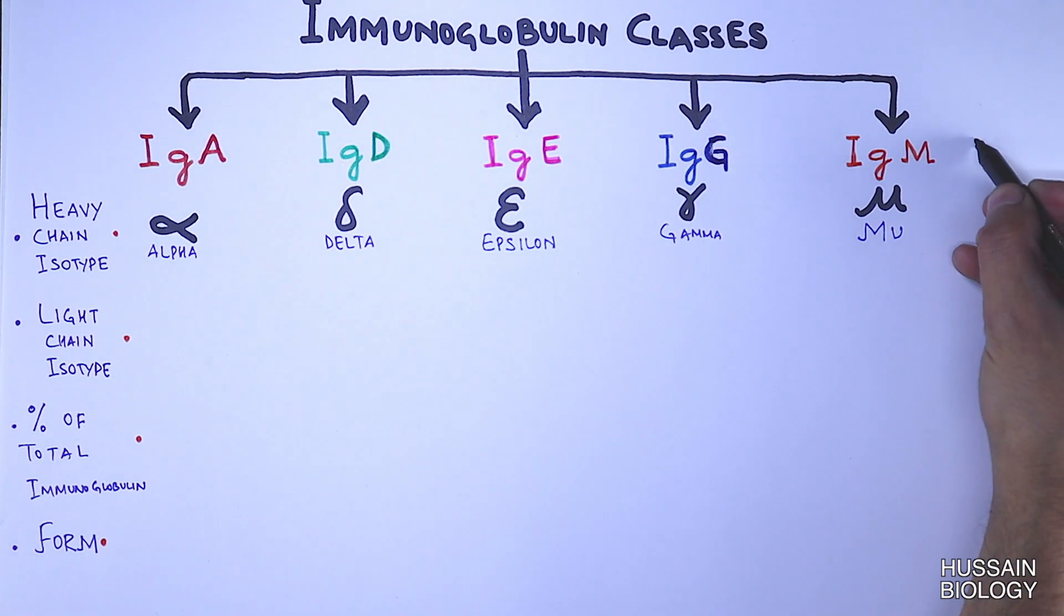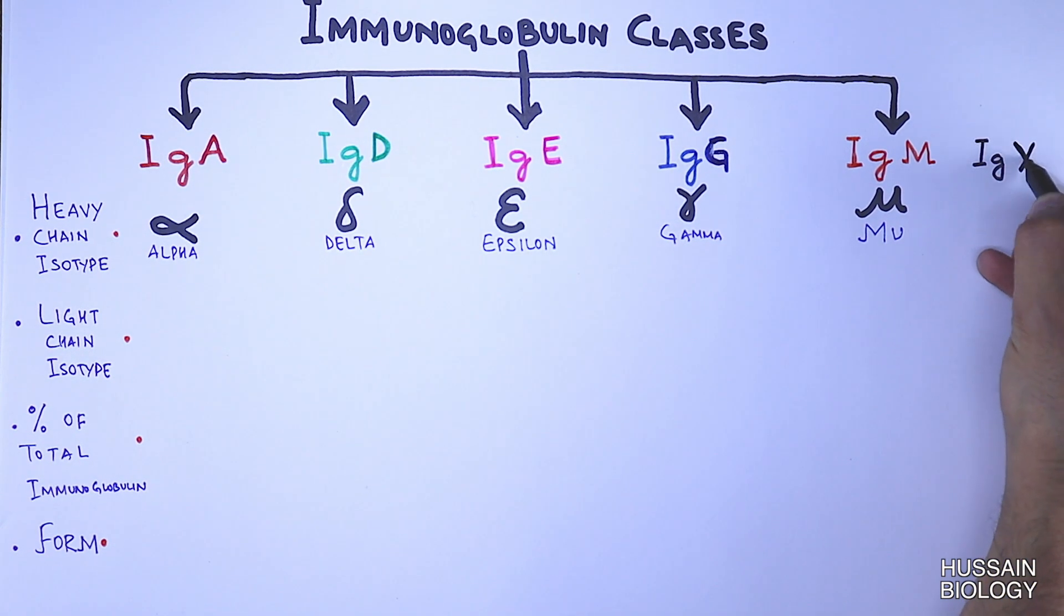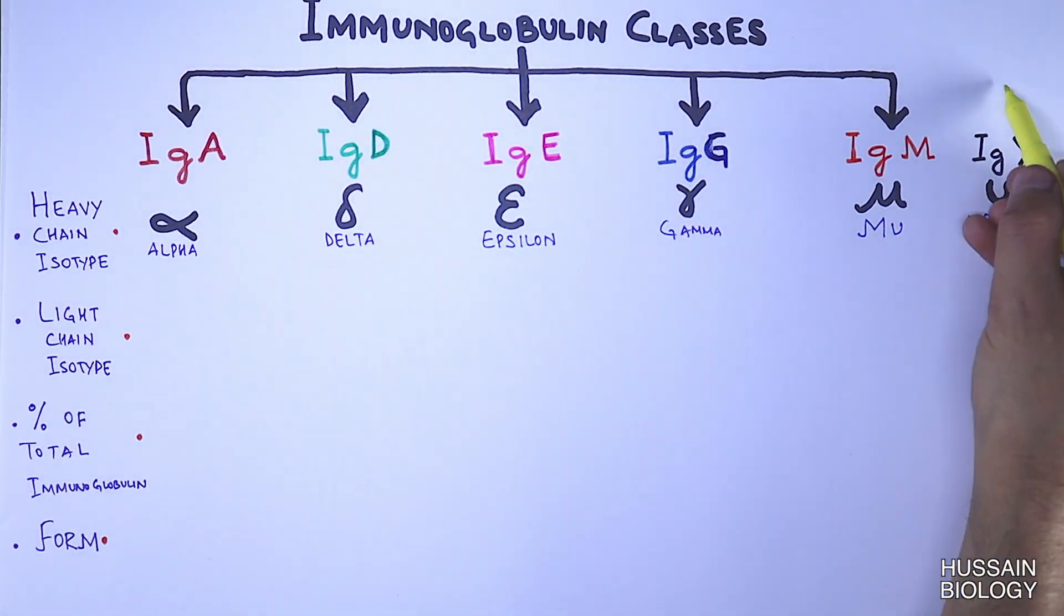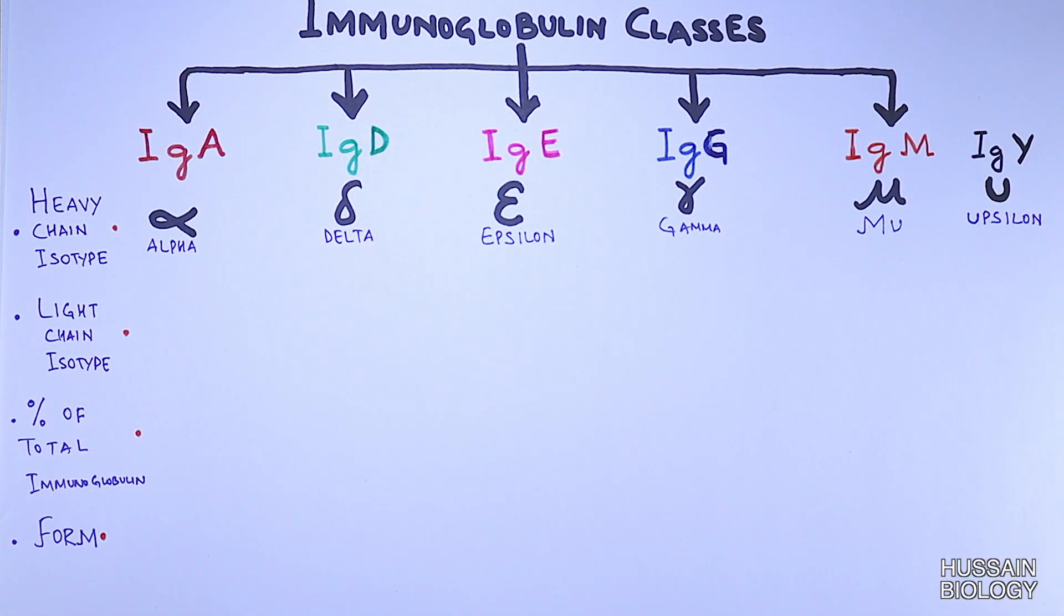In the same way there is another immunoglobulin named IgY which is found in birds, reptiles, and blood of lungfishes, and this immunoglobulin has upsilon heavy chain. Now getting to the light chain isotypes, we see there are only two types